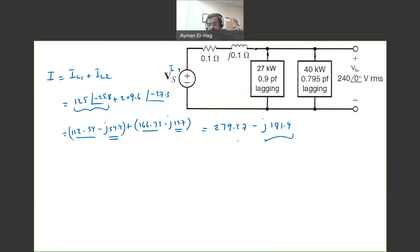Still, this is in rectangular format. So, we want to convert it back now to polar format. So, your I is basically equal to 333 angle of minus 33 amp. This is your total current.